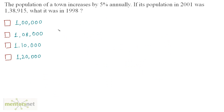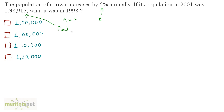The population of a town increases by 5% annually. If the population in 2001 was 1,38,915, what was it in 1998? The number of years from 1998 to 2001 is 3, so n equals 3. The rate is 5% and 1,38,915 is the final value of the population.